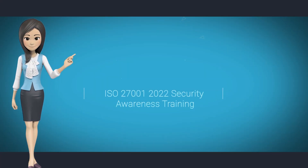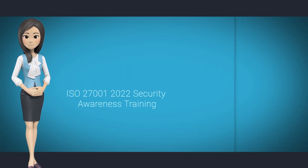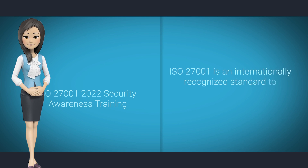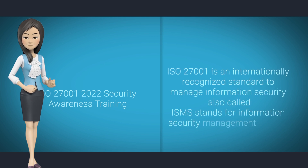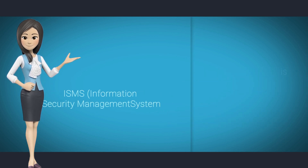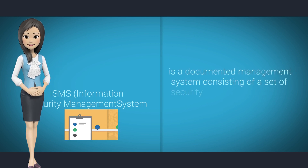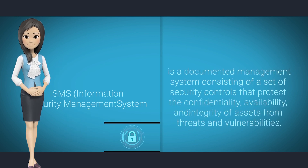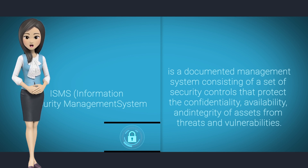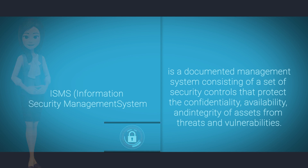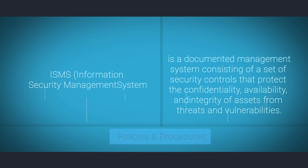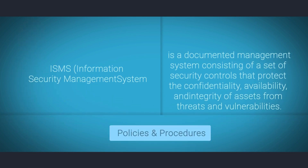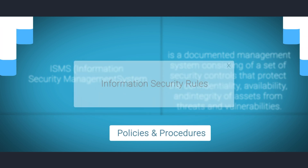ISO 27001 is an internationally recognized standard to manage information security, also called ISMS, which stands for Information Security Management System. ISMS is a documented management system consisting of a set of security controls that protect the confidentiality, availability, and integrity of assets from threats and vulnerabilities. ISMS consists of policies and procedures that set the information security rules for the business.